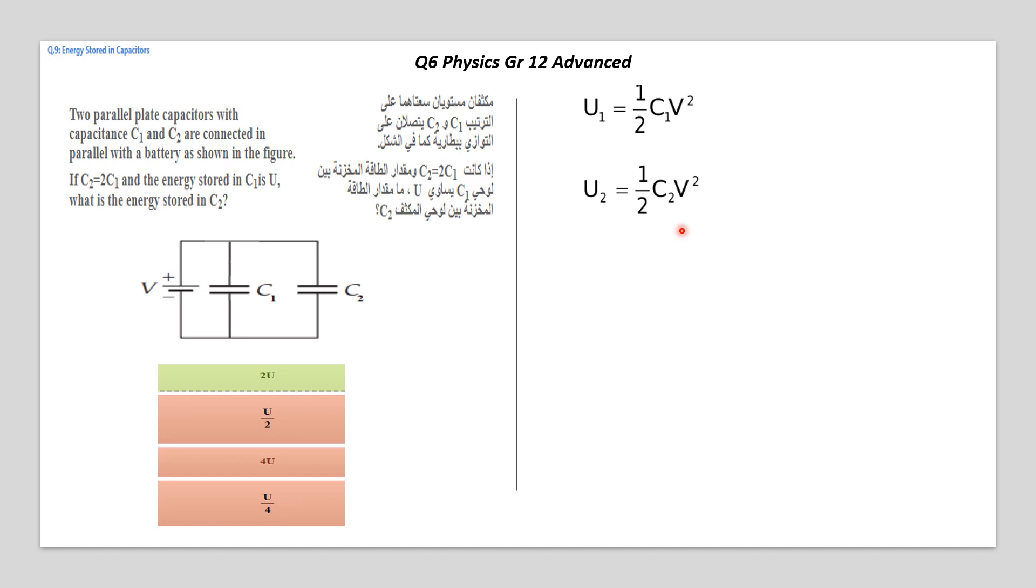We replace, as they said in the given, we replace C2 by what? By double C1. So C2 equals double C1 according to the given. So we replace it in this equation. So U2, the new form of U2 is equal half. Instead of C2, we replace it by 2C1V squared.